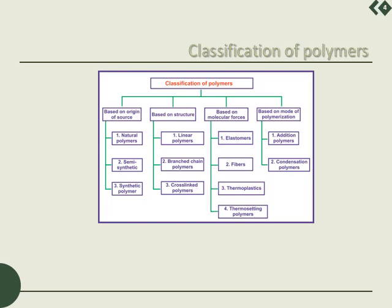Coming to the classification of polymers — polymers can be classified on the basis of origin or source, on the basis of structure, with respect to molecular forces, and with respect to the type of polymerization process. With respect to source, we have natural polymers, synthetic polymers, and semi-synthetic polymers.